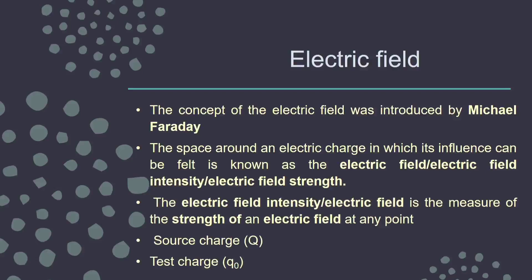Like when we are standing on the Earth we can feel its gravitational field, the test charge is placed at the point where we want to find the electric field. We put a very small charge at that point — that small charge is the test charge. Test charge is generally denoted by small q or q₀, and source charge is denoted by capital Q or in many books by small q. Whatever notation you choose, continue with it throughout.